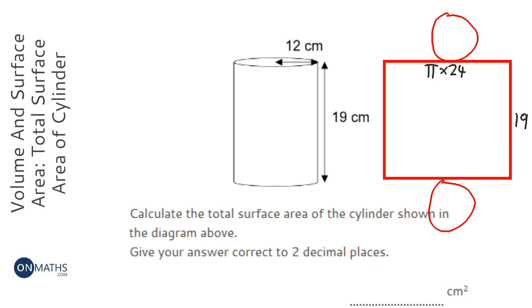So to work out the area of the rectangle, we're going to do pi times 24 times 19. And to work out the area of the circles, we're going to do pi times r squared, or pi times 12 squared for both of them.